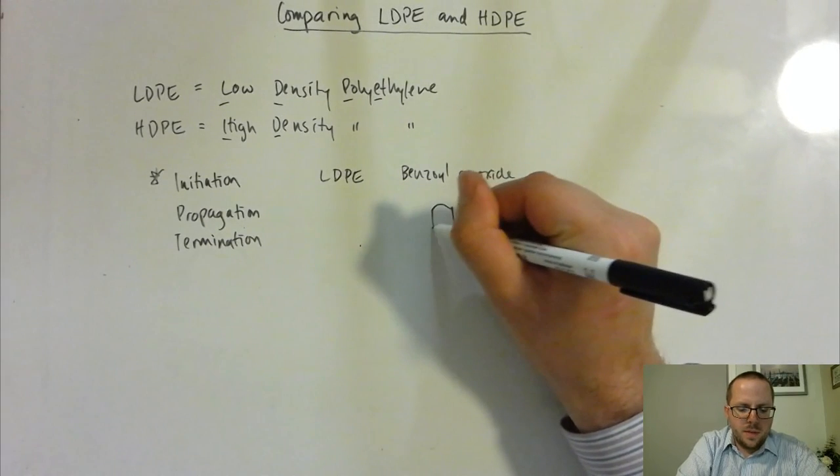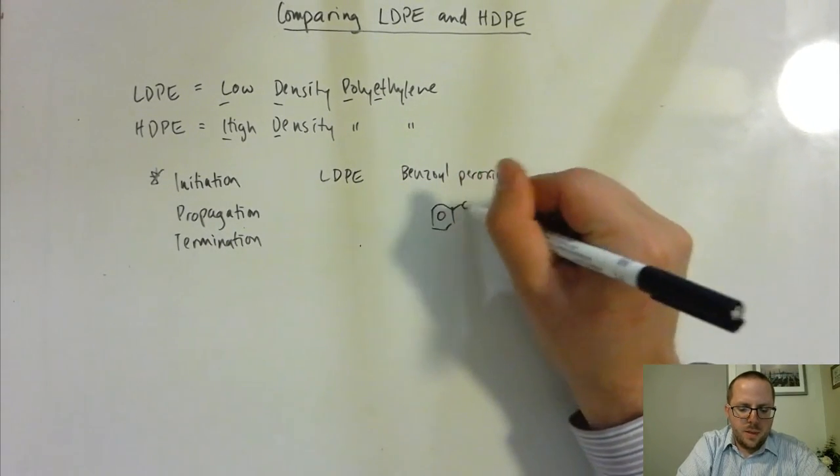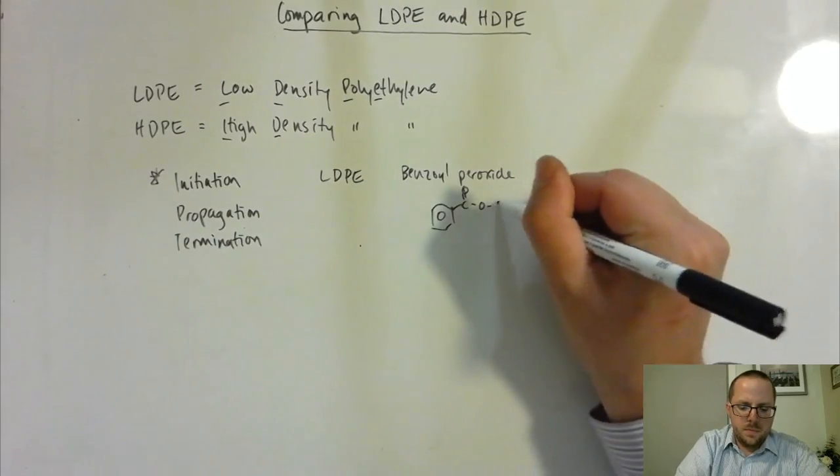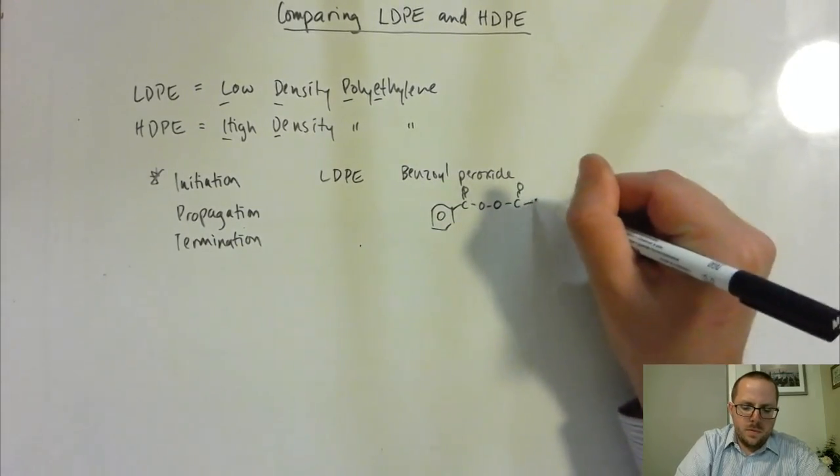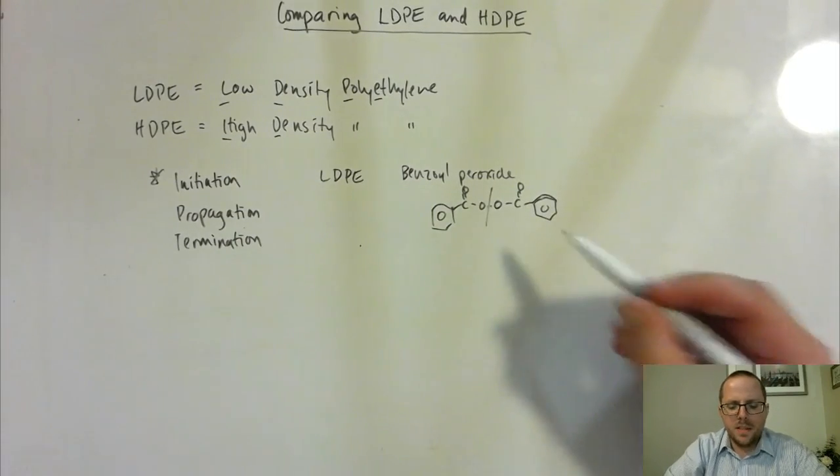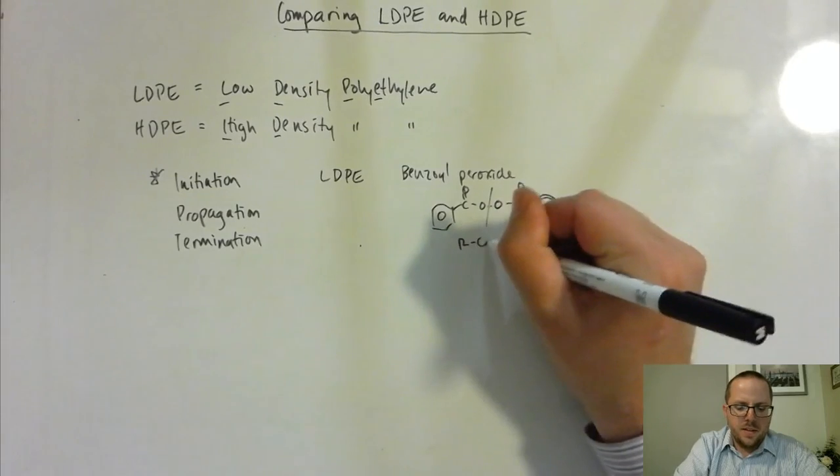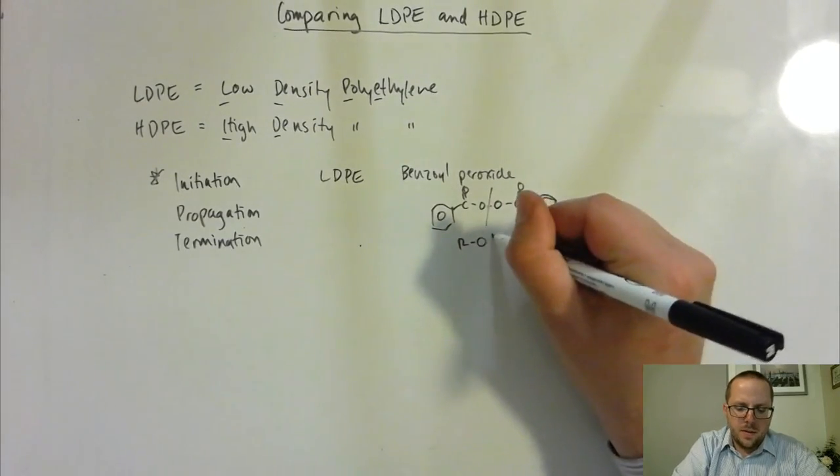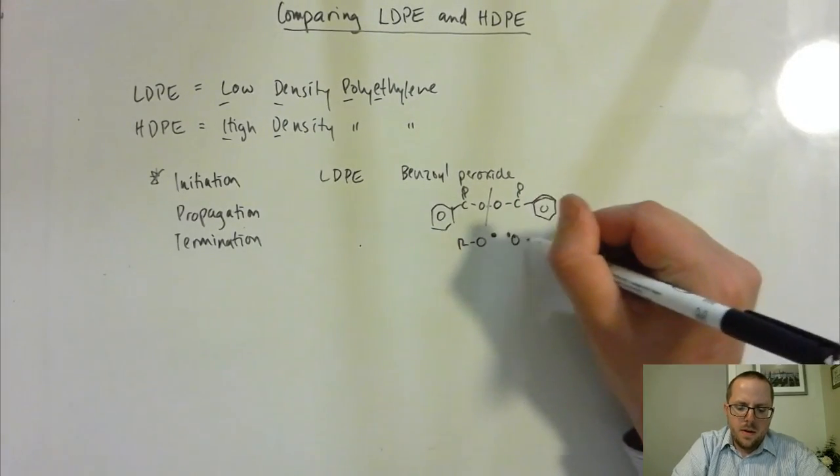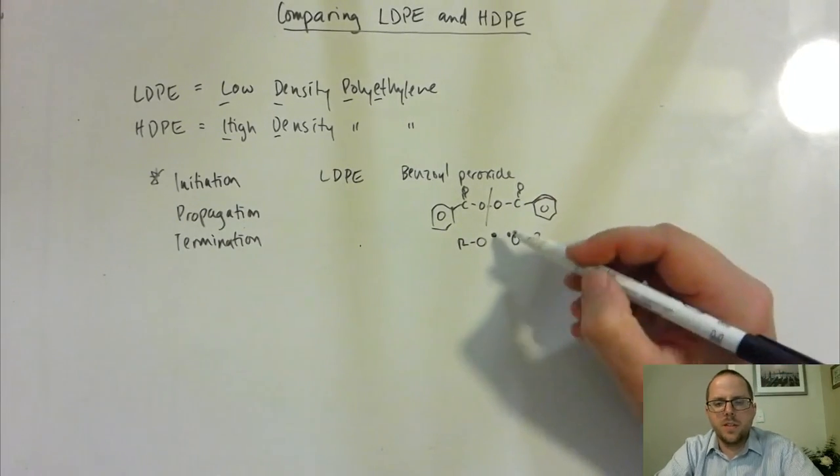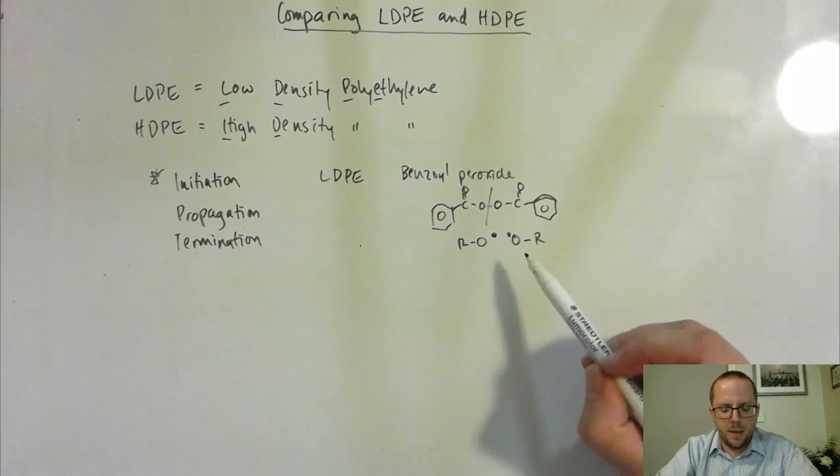Where it splits, that is definitely a hexagon, believe me when I tell you that. So where that bond splits, leaving us with unpaired electrons. I'm just going to simplify that to say that this is an R group, and then it looks like this. So two radicals with unpaired electrons.